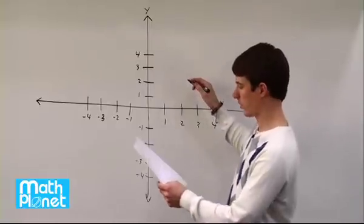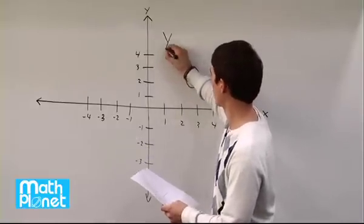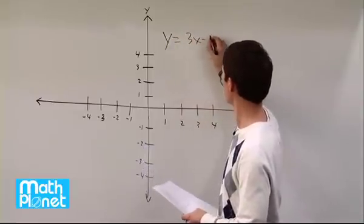Here we have our coordinate grid again, and we want to graph the line y equals 3x minus 2.